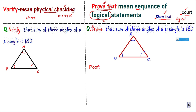Let me explain with an example — the same question I was asked in my very first teacher interview. The question is: 'Sum of three angles of a triangle is 180 degrees.' I will do this in two ways — first I will verify it, and then I will prove it.